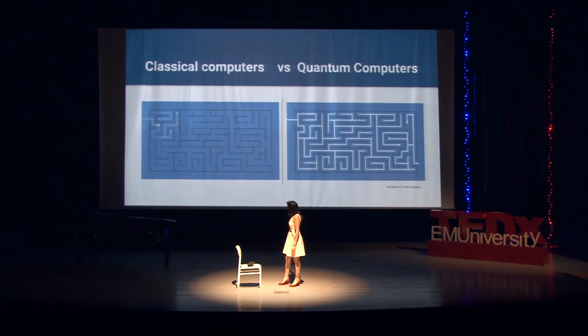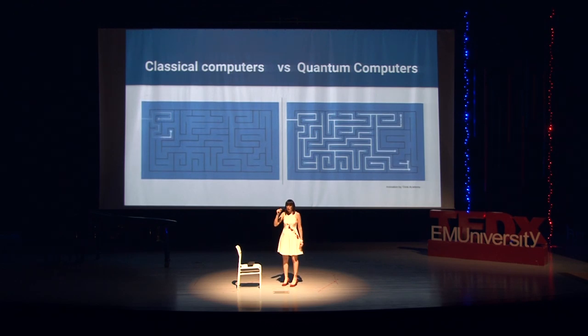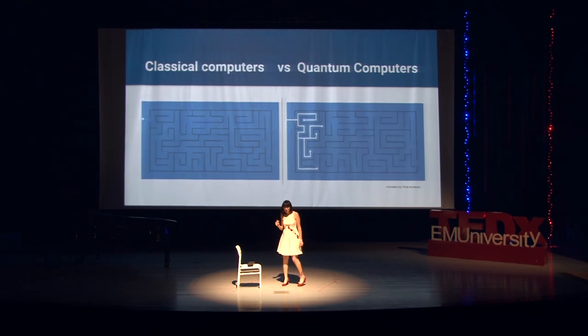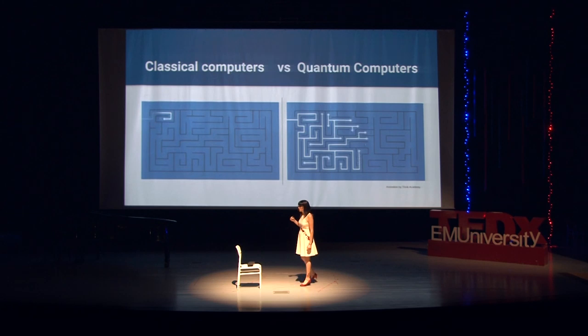Here's a more understandable example. Let's say you are trying to find the exit of a maze. With a classical computer, it needs to try all paths one by one. But with quantum computers, it has all probabilities and will try all paths at the same time, giving you the result in a short time. This is really remarkable.